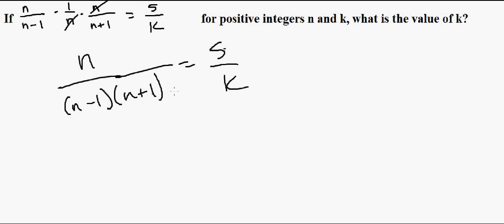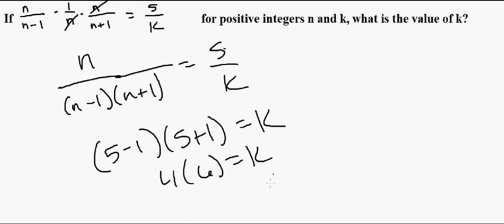Now we know that n equals 5, so I'll plug that into the denominator to get k. So (5-1)(5+1) = k, 4 × 6 = k, so k equals 24.